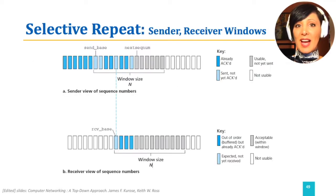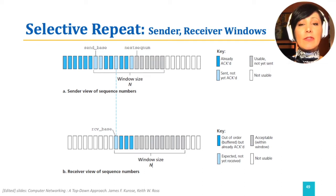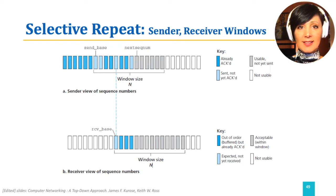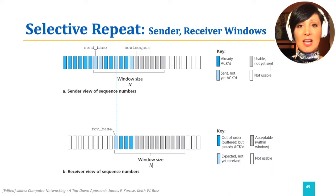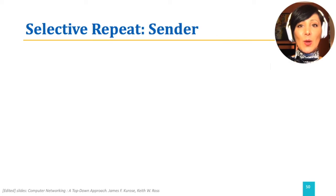Note that in Selective Repeat, the sender and receiver windows might be at different sequence numbers based on the packets and acknowledgments on the fly. The windows slide forward when there is no gap between the acknowledged packets on the observed side.